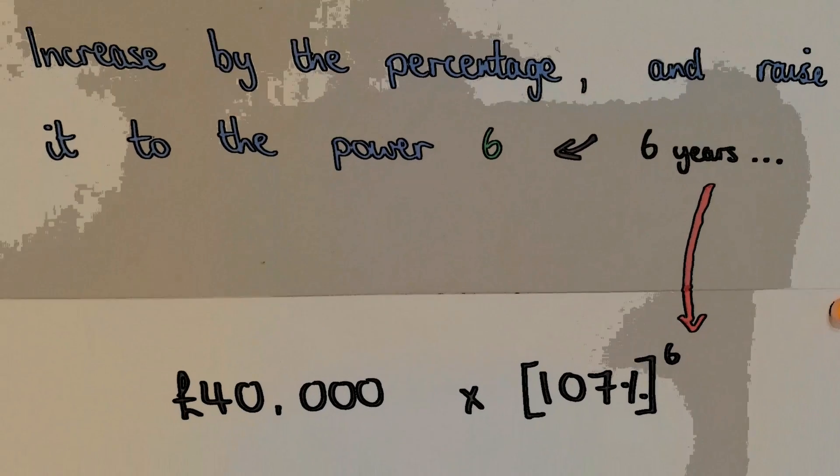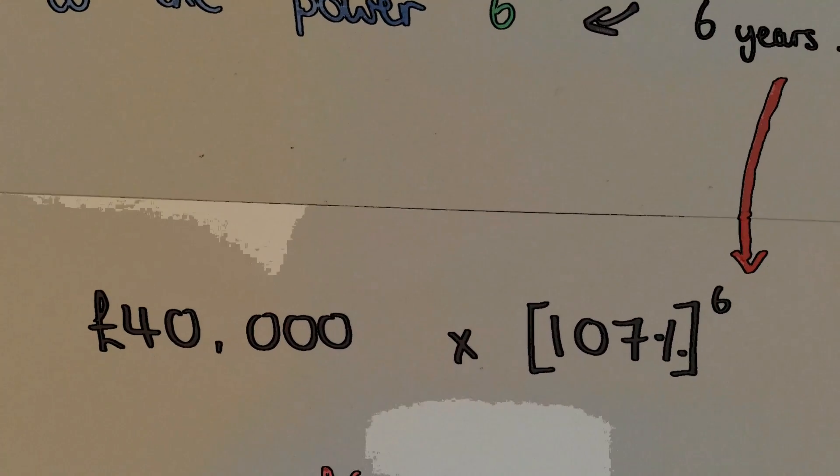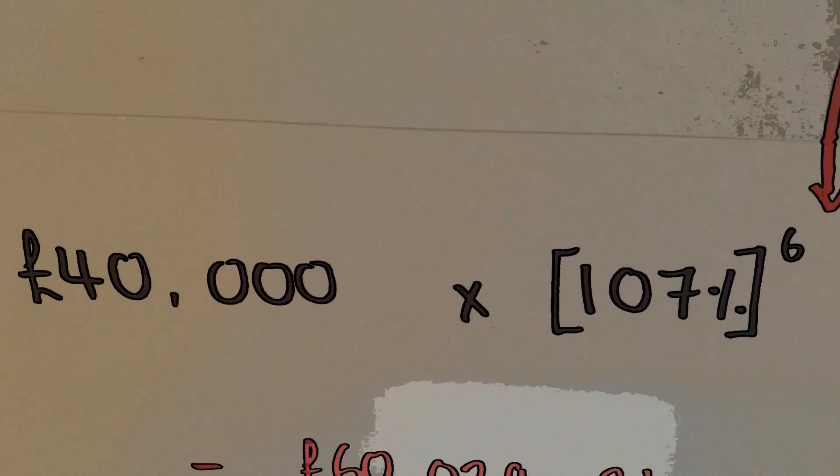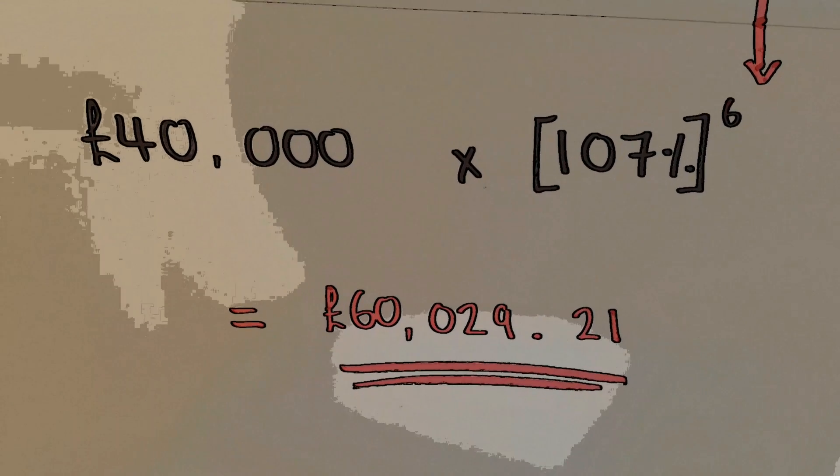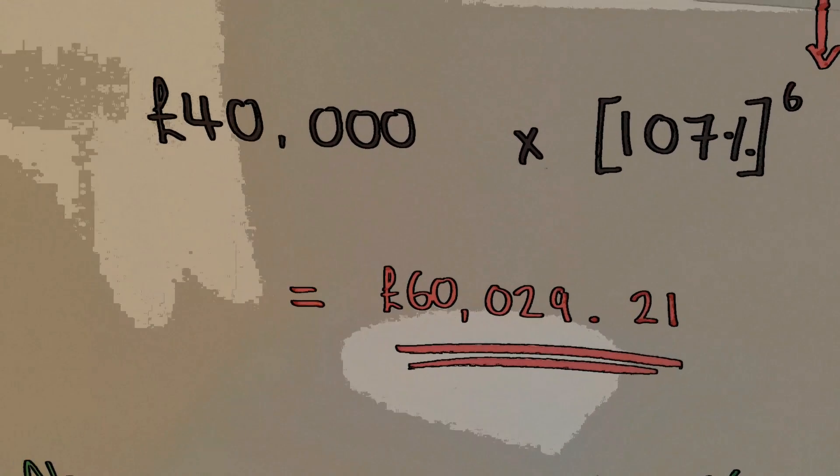So in this case, forty thousand pounds times one hundred and seven percent, which is our percentage multiplier. You put one hundred and seven percent in brackets and add a power of six to it.